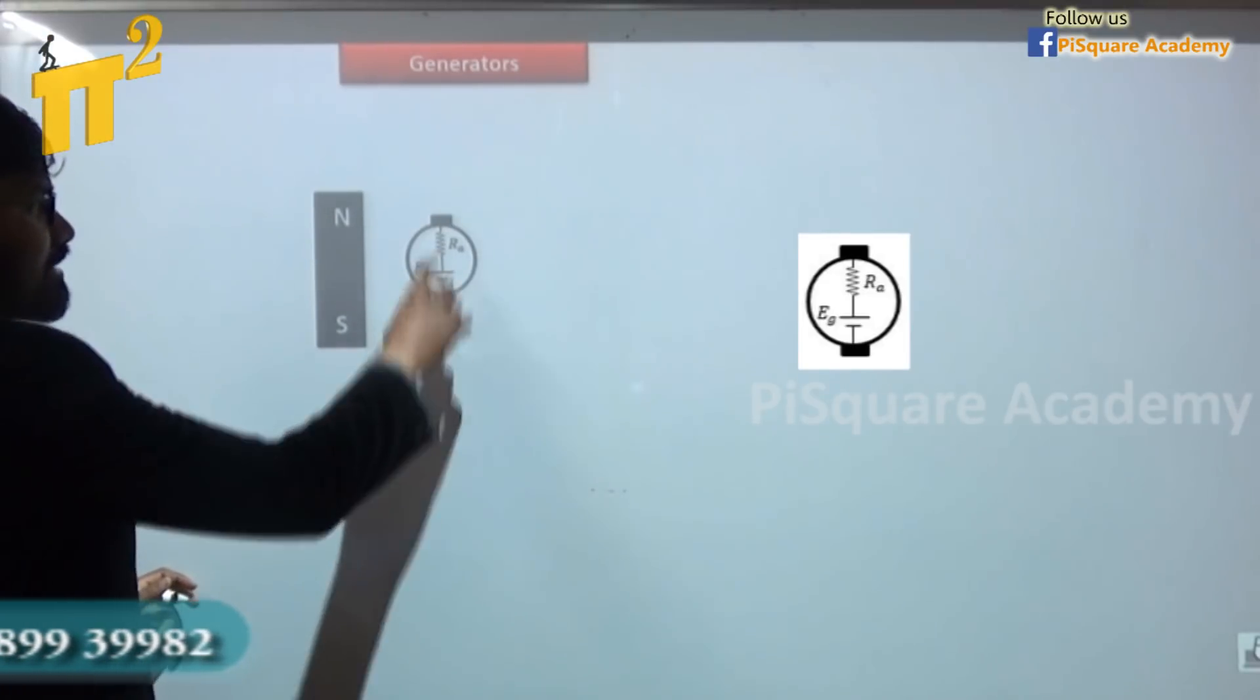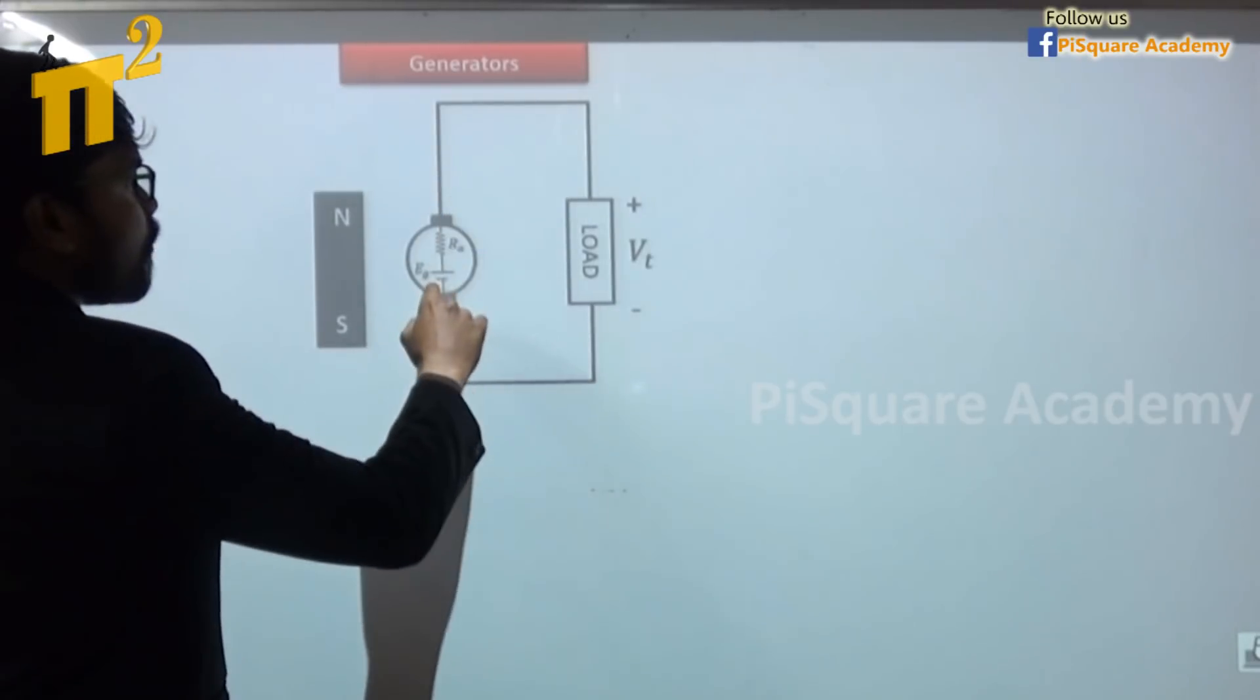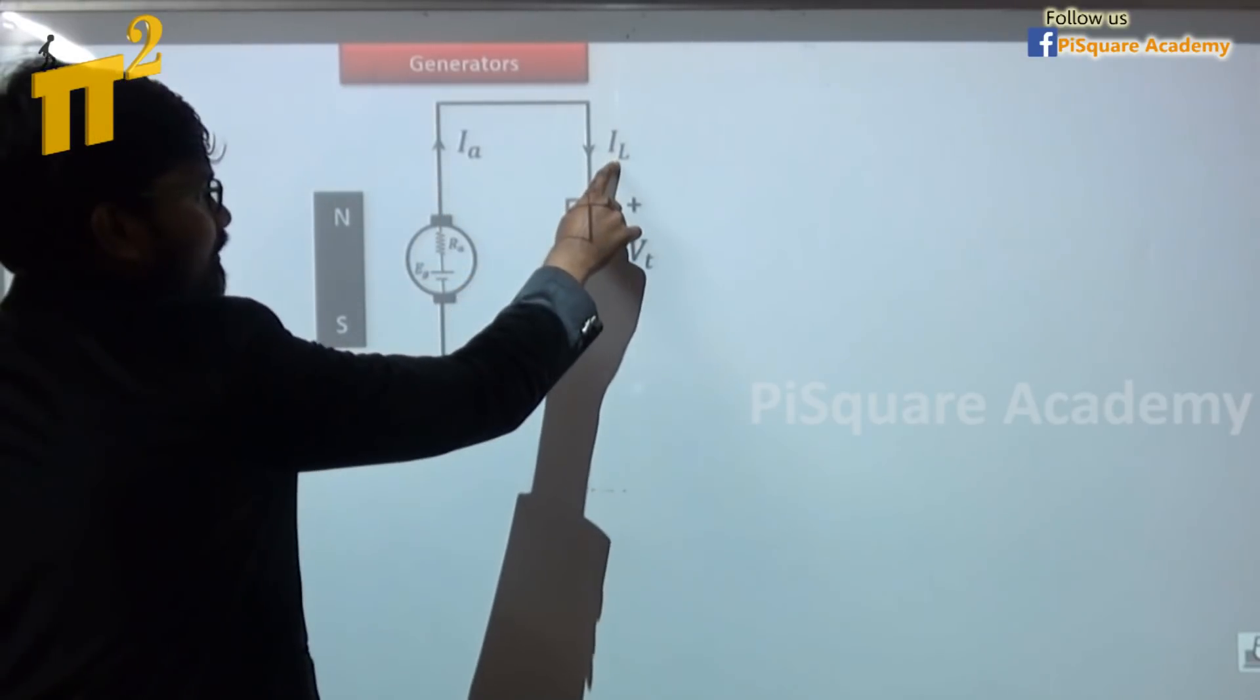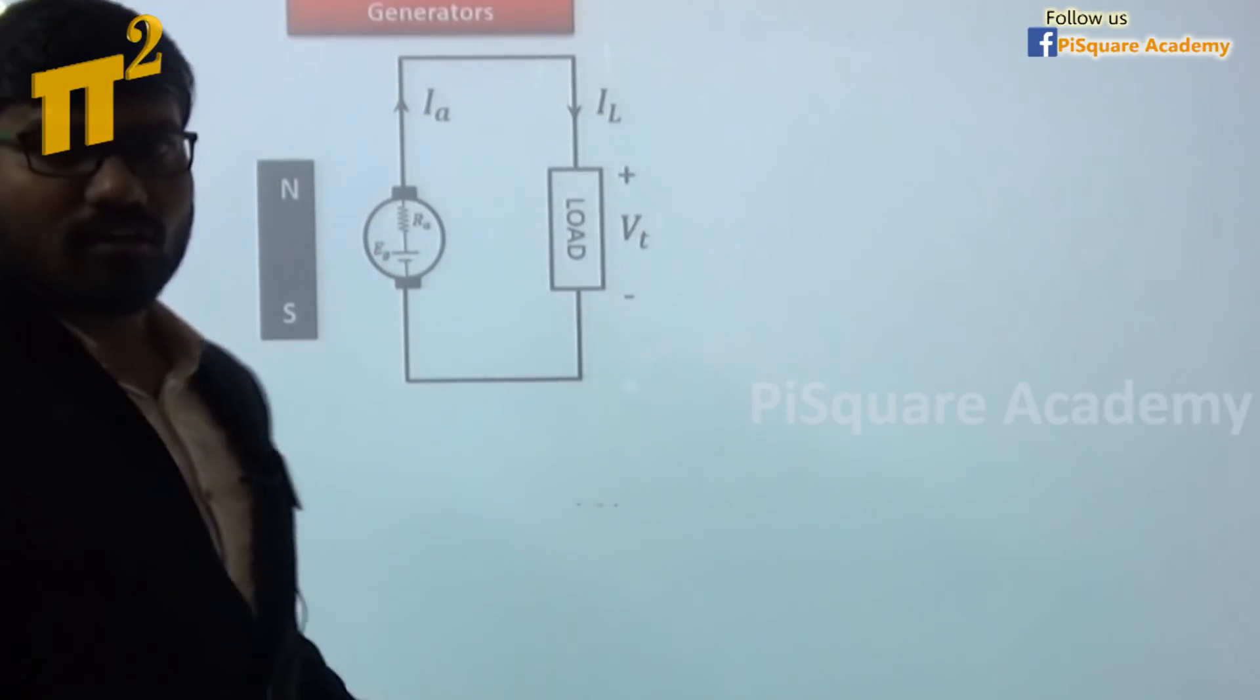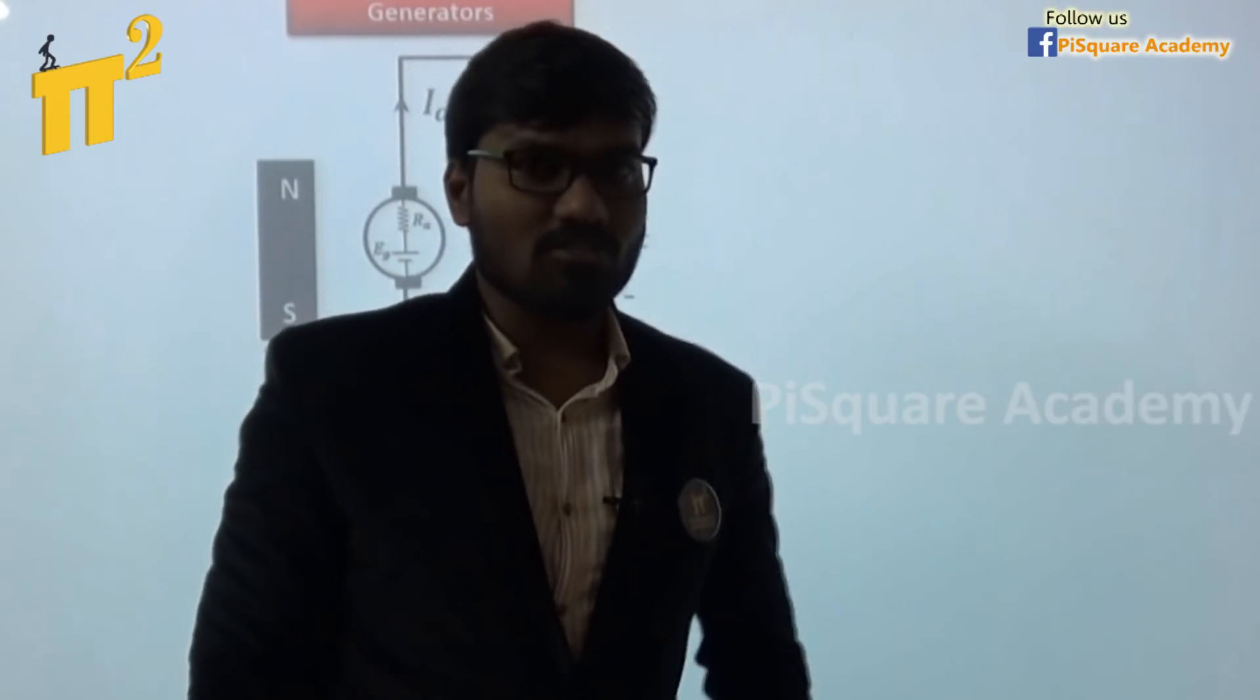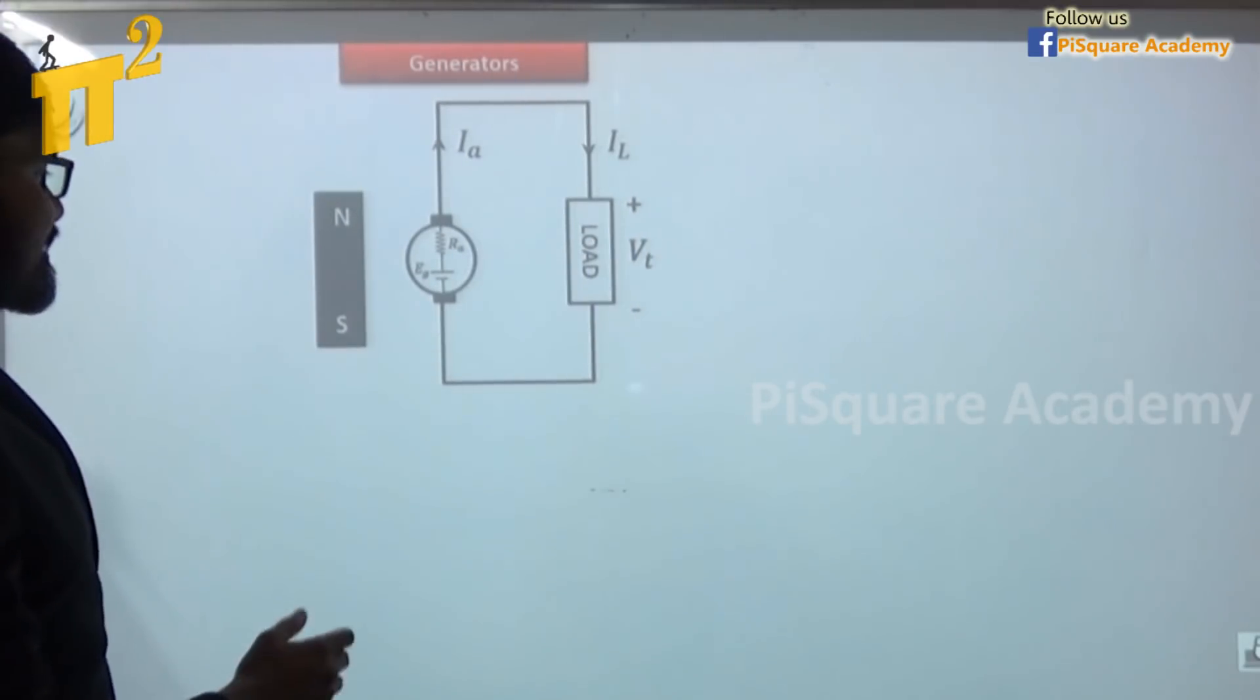So that is represented with Eg, generated EMF. When we connect this armature through the brushes to a load, then some current will flow. That current I am representing with the load current Il. That's the same as armature current. This type of DC generator is called a permanent magnet DC generator, because we are using a permanent magnet here.